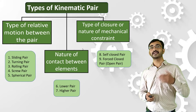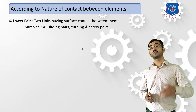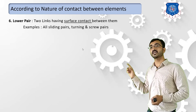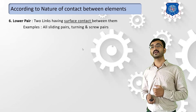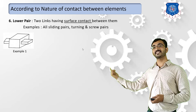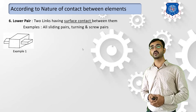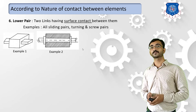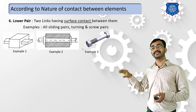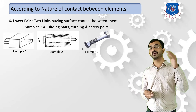Now let's learn the second classification — nature of contact between the links. The first type is known as a lower pair. When two components are connected such that they have surface contact between them as they move, it is termed as a lower pair. For example, in a sliding pair the entire surface of the rectangular block is in contact with the fixed block. In a turning pair, the entire surface of the shaft is in contact with the hub. In a screw pair, the entire surface of the nut is in contact with the screw body. So sliding pair, turning pair, and screw pairs are the best examples of a lower pair.